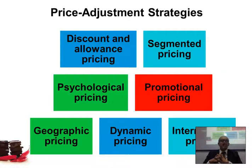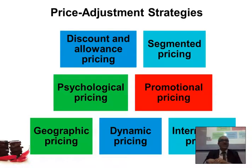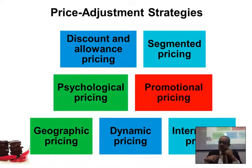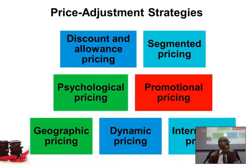Segmented pricing is when you sell the same product but at different prices depending on which segment is buying it. For example, if you have an extra battery for a mobile phone it might be $400, but for a kids' iPod it might be $60 because kids have less purchasing power. If it's a business laptop battery, maybe it's $150. So you're selling the same product at different prices depending on the segment.